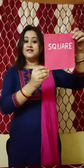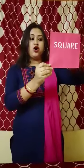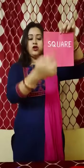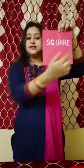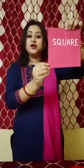This is a square. S-Q-U-A-R-E. Square means all its sides are equal. You can see, all opposite sides are equal. So this is called square.